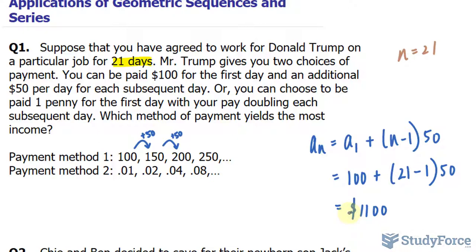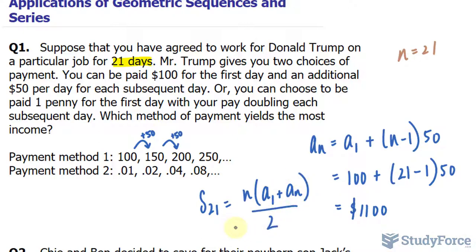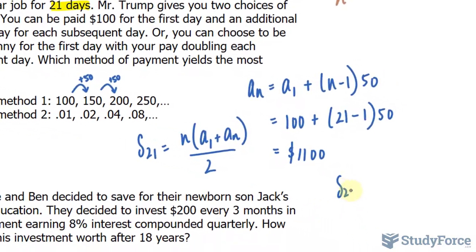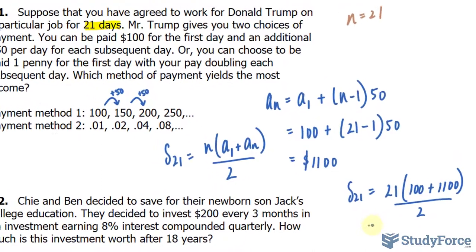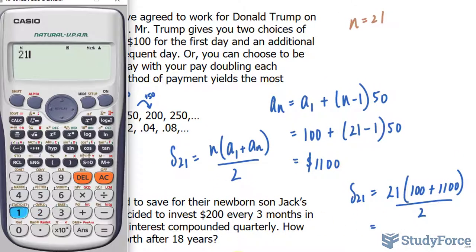Not too bad. From here you can find out how much money that is altogether. We can use this formula where the sum at the 21st day is equal to n times the quantity of the very first payment plus the last payment, divided by 2. Substituting everything we know, I get 21 times (100 plus 1,100) divided by 2. This gives the amount I would make choosing the first method: $12,600 by the 21st day.